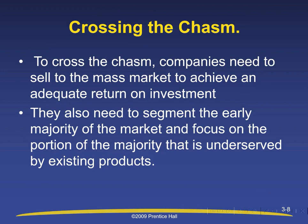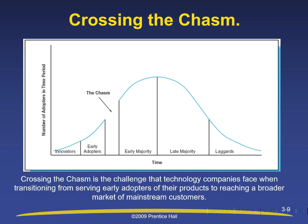Crossing the chasm: companies need to sell to the mass market to achieve an adequate return on investment. They also need to segment the early majority of the market and focus on the portion of the majority that is underserved by existing products. Crossing the chasm is the challenge that technology companies face when transitioning from serving early adopters to reaching a broader market of mainstream customers.